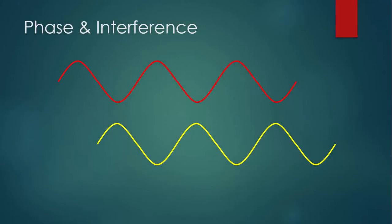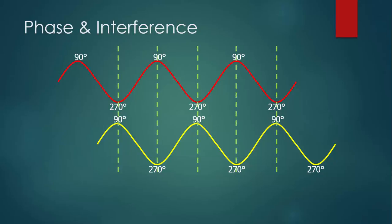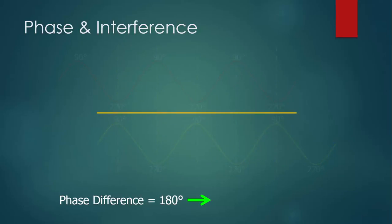Here are those two waves again, but I've shifted them. Using the same numbers — crests at 90 degrees, troughs at 270 degrees — if we imagine these two waves superimposed, we see that troughs and crests line up this time. So 270 minus 90 is 180, and 90 minus 270 is negative 180, but still 180 degrees apart. A phase difference of 180 degrees results in maximum destructive interference.